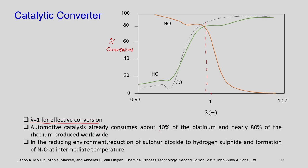The automobile industry consumes almost 40% of platinum and 80% of rhodium produced. In the fuel-rich reducing environment, reduction of sulphur dioxide to hydrogen sulphide also takes place, and there may be formation of N2O at intermediate temperatures. N2O is not at all good because nitrous oxide can damage the ozone layer. Research is ongoing to prevent these side reactions even at the stoichiometric condition of lambda equal to 1.